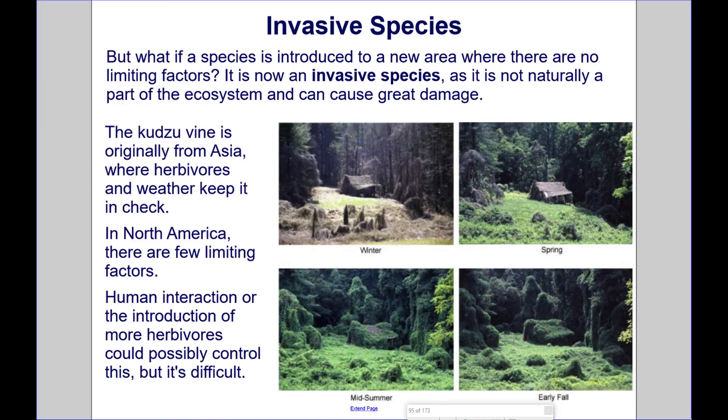But what if a species is introduced to a new area where there are no limiting factors? It is now an invasive species, as it is not naturally a part of the ecosystem and can cause great damage. The kudzu vine is originally from Asia, where herbivores and weather keep it in check. In North America, there are few limiting factors. Human interaction or the introduction of more herbivores could possibly control this, but it's difficult.